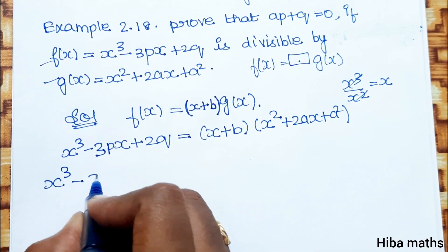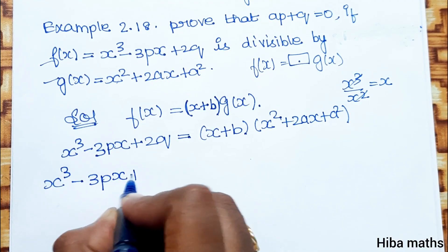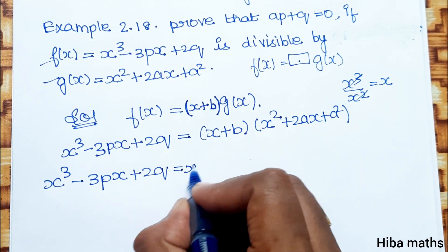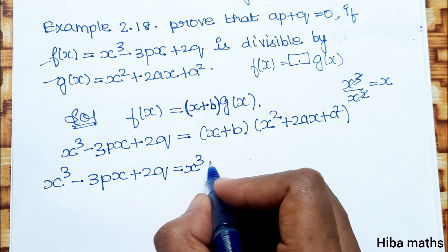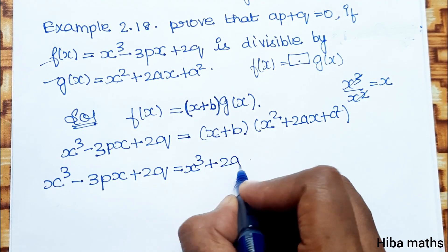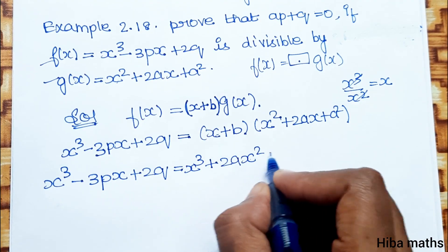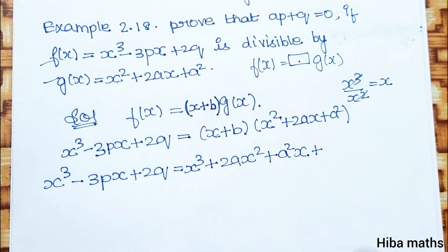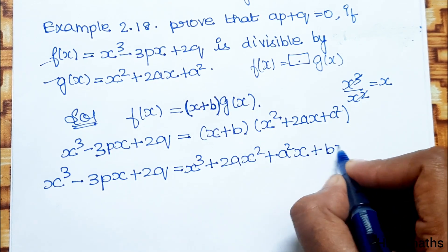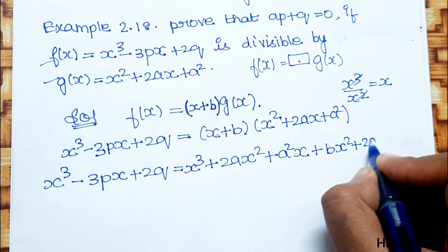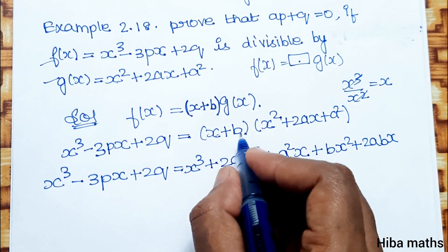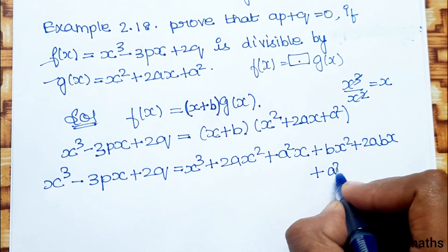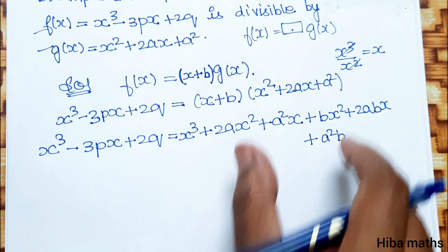Expanding: x cube minus 3px plus 2q equals x into x square plus 2a into x plus a square, plus b into x square plus 2a into b into x plus b into a square. So we get x cube, plus terms in x square, plus 2ab into x, plus a square b.